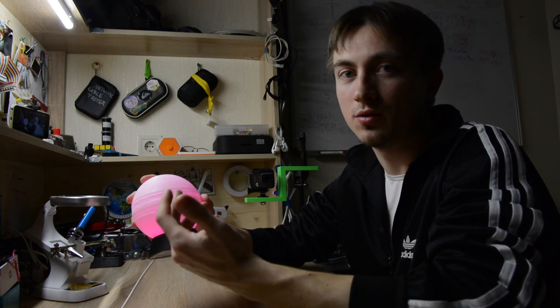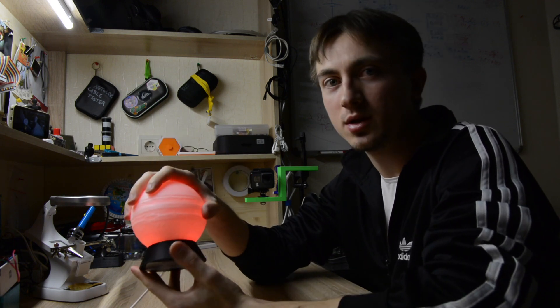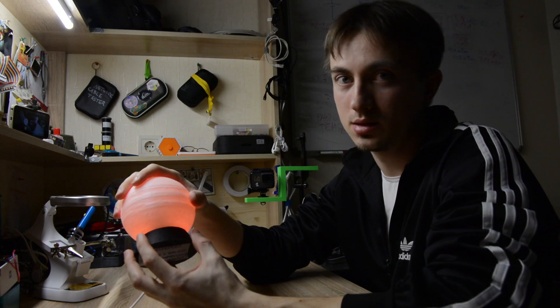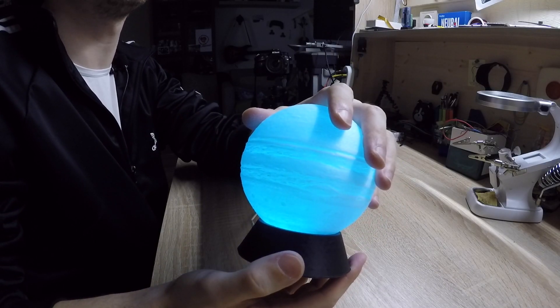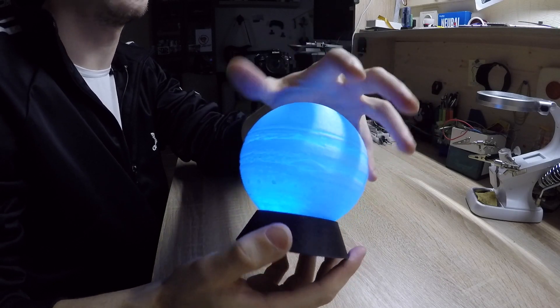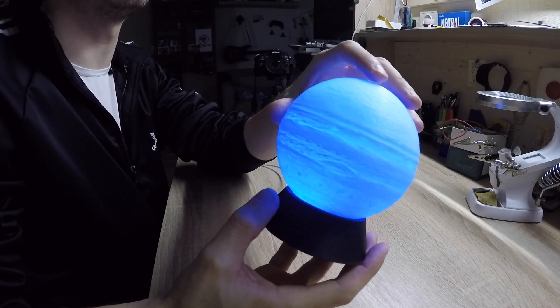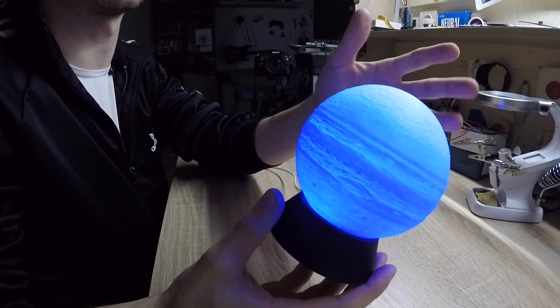This lamp consists of only two parts: the Jupiter itself and the base. The Jupiter model I found on Thingiverse—I'll give the link to the model in the description. And the base I modeled in FreeCAD. It was pretty straightforward.